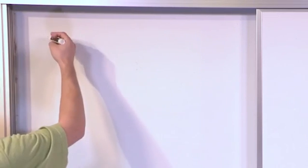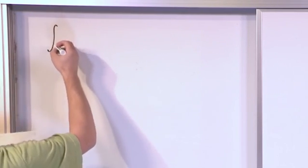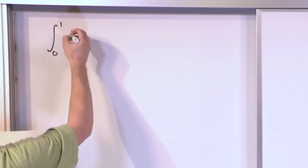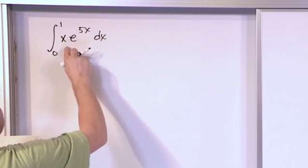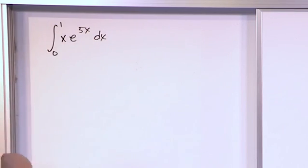So let's jump right in to a problem that's actually going to be our first definite integral where we're going to need to integrate by parts. So if you have x e to the 5x dx, this is our integral and we're doing a definite integral.